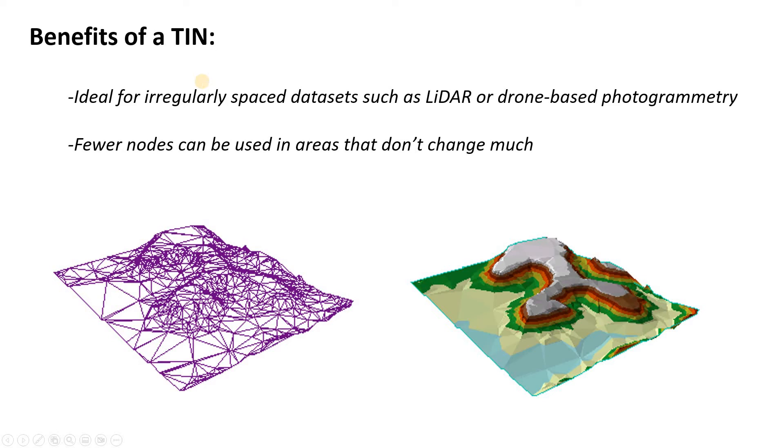So, why would we use a TIN data set? One reason is that it can be a quick and easy way to deal with irregularly spaced data sets such as LIDAR or drone-based photogrammetry. These are essentially methods where the native data is not a grid, not a regularly spaced raster. The native data is a bunch of points that might be already irregularly spaced. So we can render a TIN pretty quickly from that.